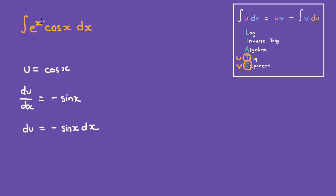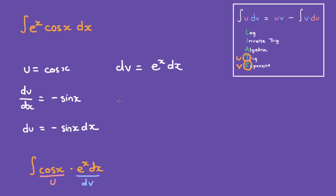Let me rewrite this integral so it's easier to look at. We have cosine of x times e to the power of x dx. So far we know that this part is the u, so this part is going to be the dv. So dv is equal to e to the power of x dx, and v is the integral of that, which is just e to the power of x.